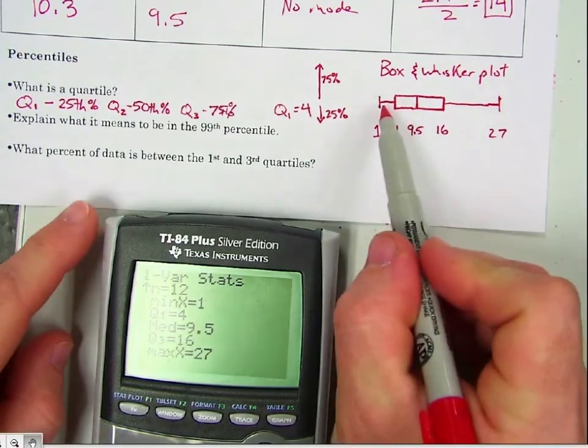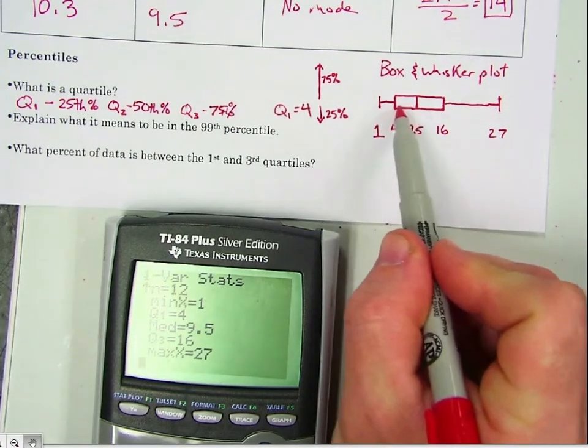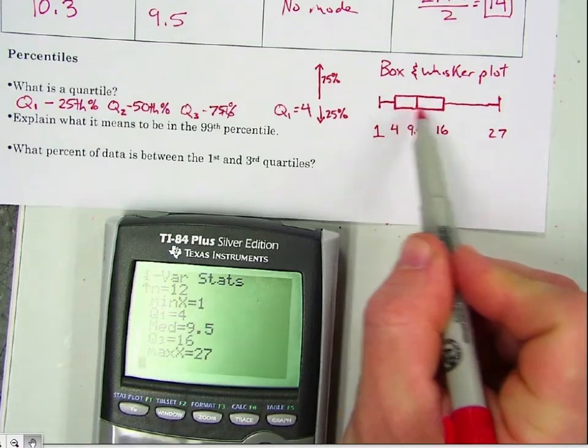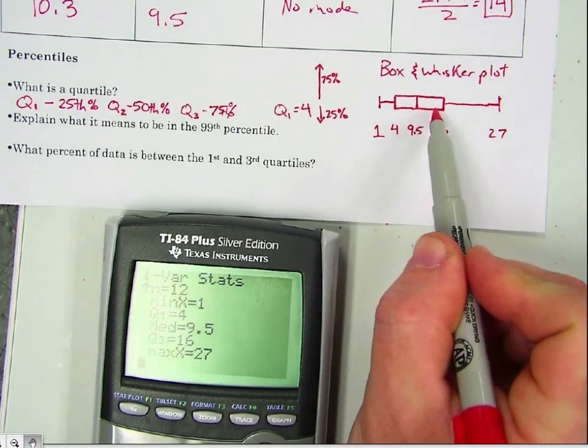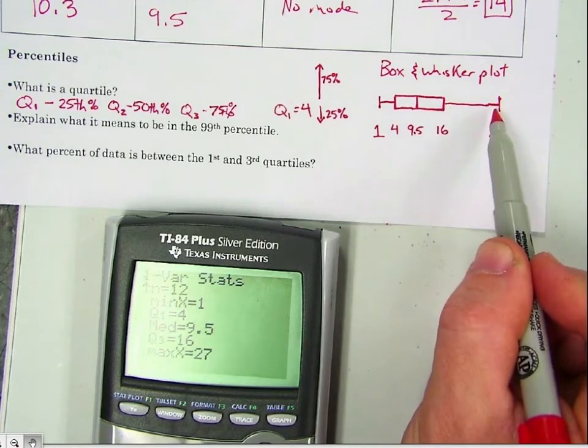And then it just connects the lowest to the box and the box to the highest. So what it's showing us is 25% of the data falls right in here, 25% of the data falls in here, 25% of the data falls in here, and 25% of the data falls right in here.